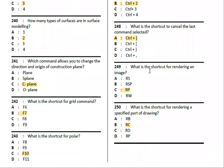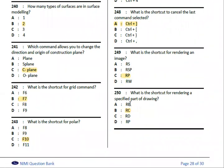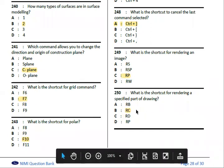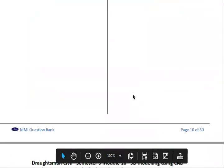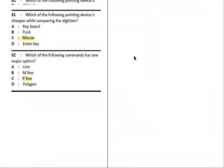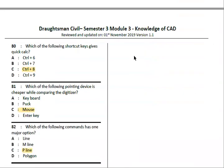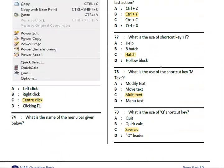What is the shortcut for rendering an image? The shortcut is RR. The shortcut for rendering a specified part of the drawing is RC.